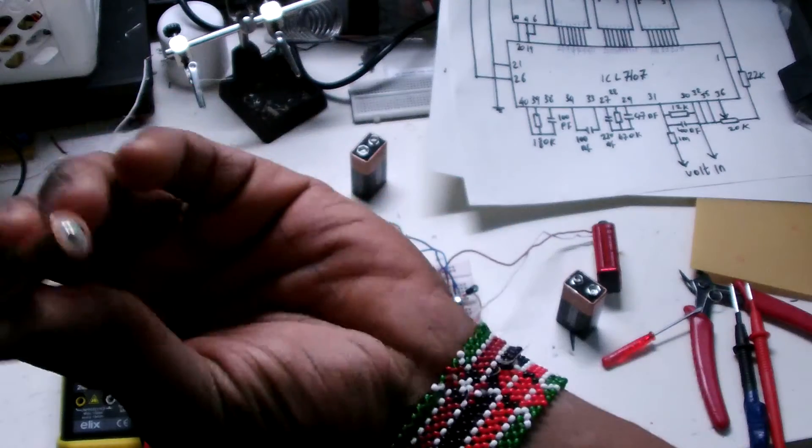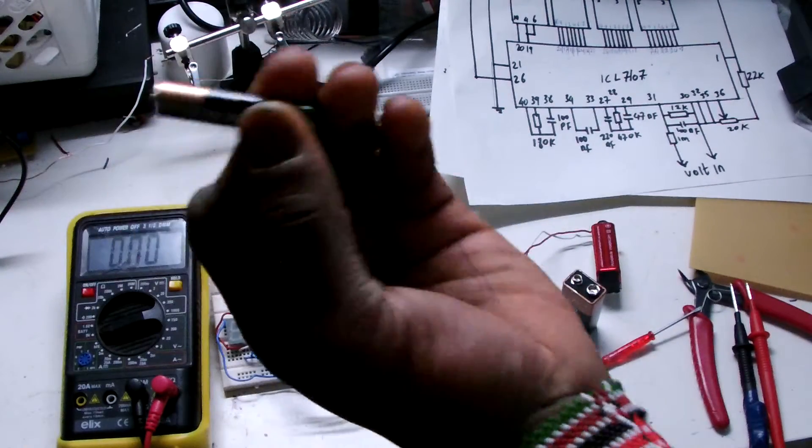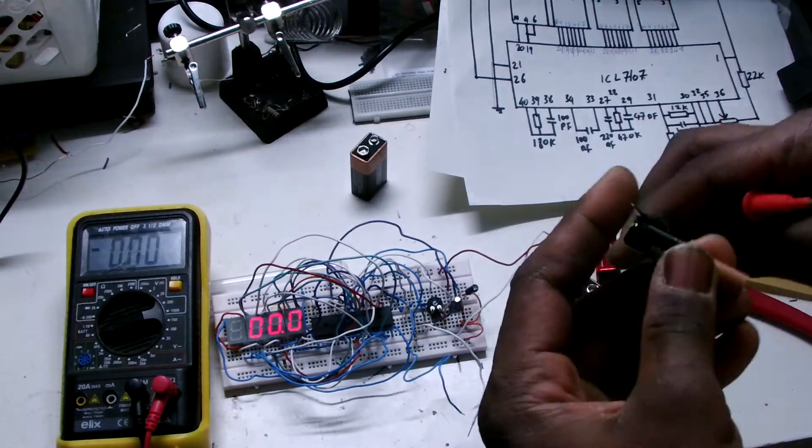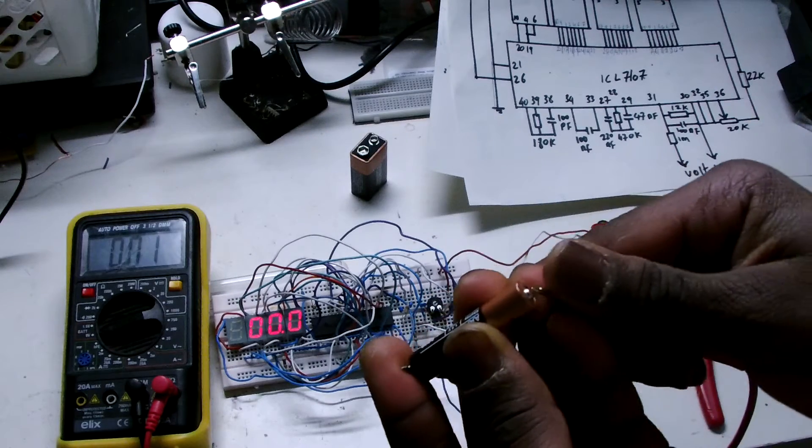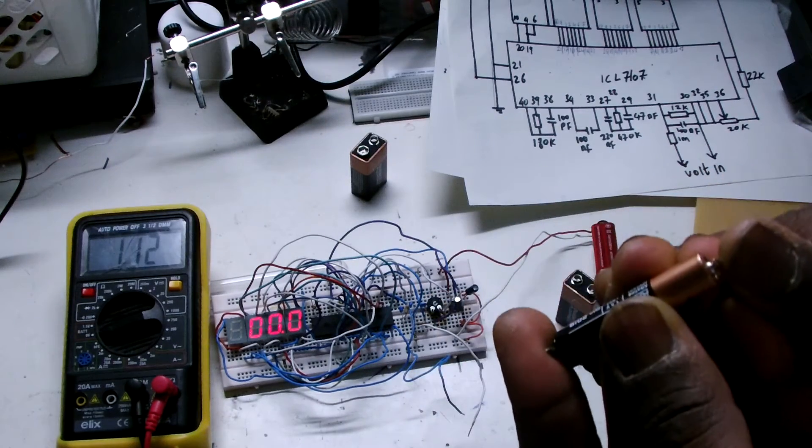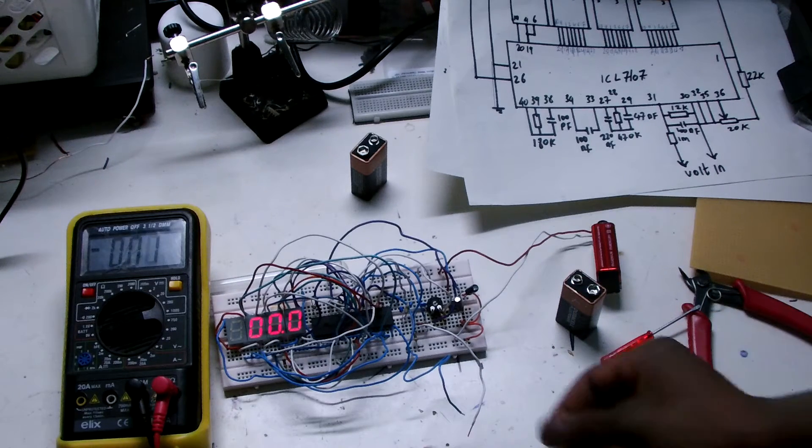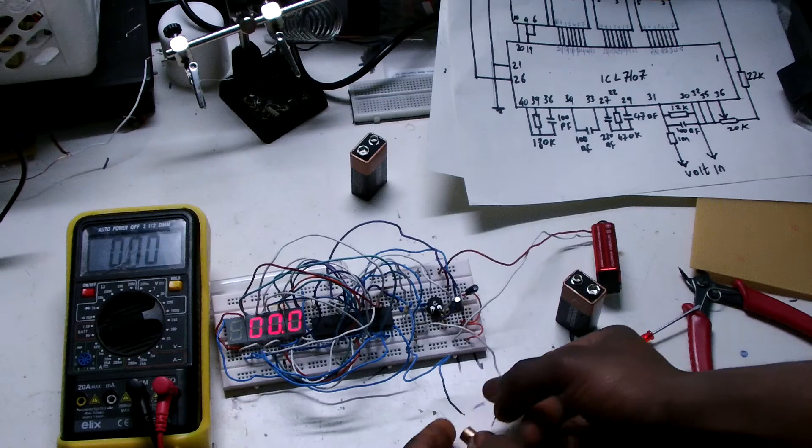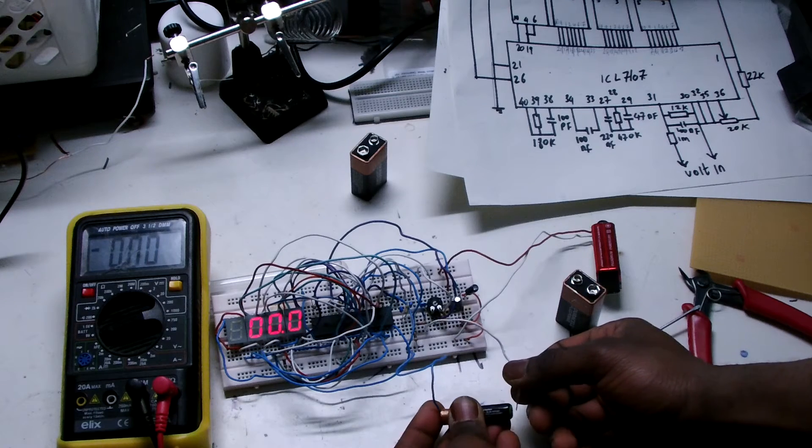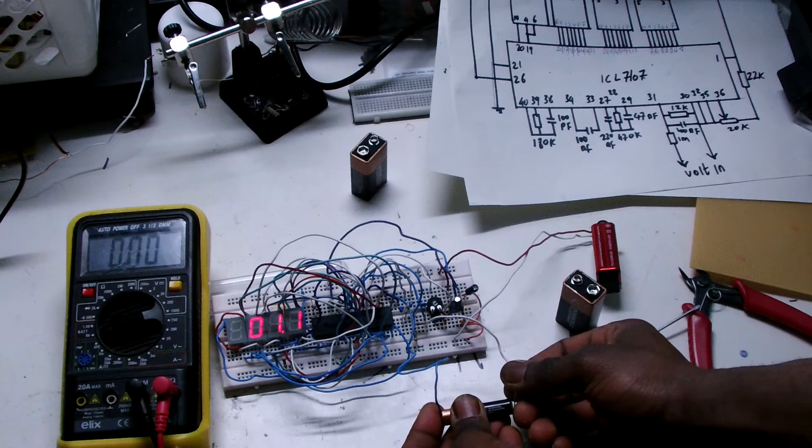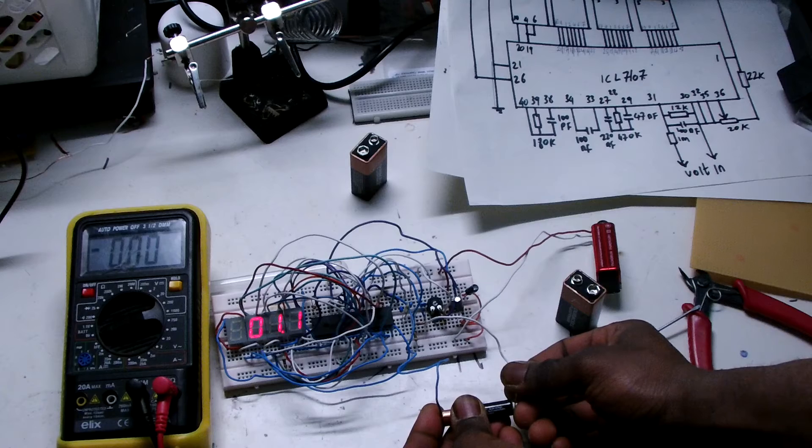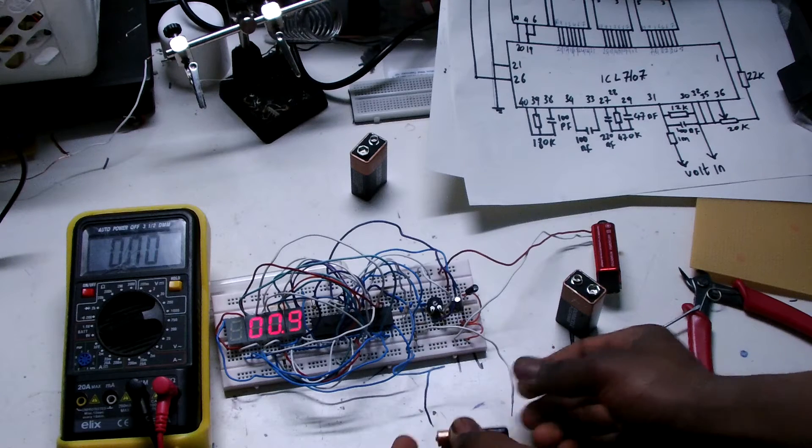And I'm going to measure this small battery here. So it's 1.1 something, 1.1 volts. That's good.